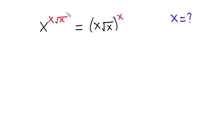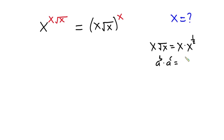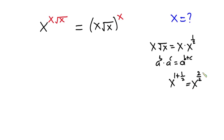Now let's get started. First, let's focus on the exponent. We have x times the square root of x, and this could also be written as x times x to the power of one half. From indices, if I have a to the power b times a to the power c, this is the same as a to the power b plus c. So I can write this as x to the power one plus one half, and combining into one fraction with a common denominator, we get x to the power three over two.